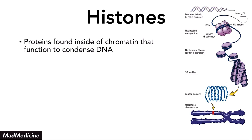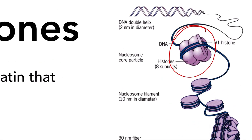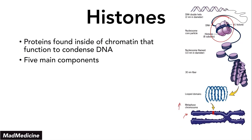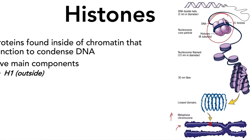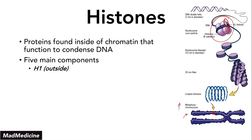Histones are proteins that are found in the chromatin that function to condense DNA. If you look right here, this is a chromosome, and the higher up we go, the deeper we are focusing — essentially magnifying into the chromosome. And this right here is your histone unit. Your histone unit has five main components. Those five components are the H1 histone component, which is on the outside. This is probably the highest yield or most important component you need to remember, because this is the component that is often tested on. This is the component that is not actually bound into the histone complex — that is the H1 histone unit.